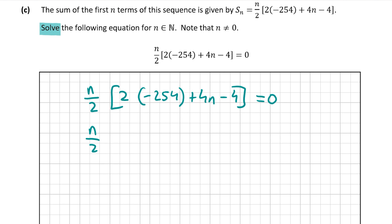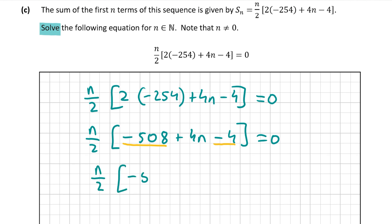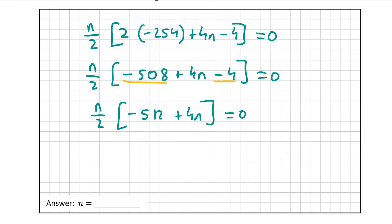So first of all I'm going to do 2 by minus 254, which gives minus 508. I'm going to do the part in the brackets first. We have two like terms: minus 508 and minus 4, as neither has an n. So minus 508 minus 4 gives me minus 512. That gives us n over 2 outside of minus 512 plus 4n, all equal to 0. Now I have to multiply out n over 2 by minus 512 plus 4n, giving minus 512n over 2, and then n over 2 by 4n gives 4n squared over 2, all equal to 0.